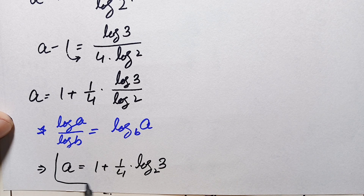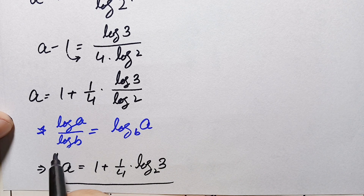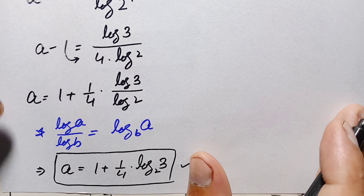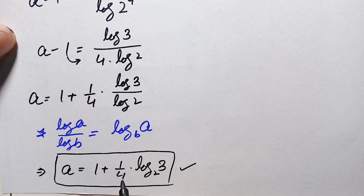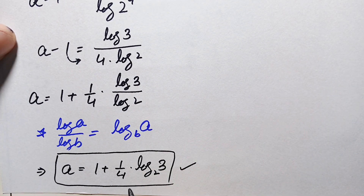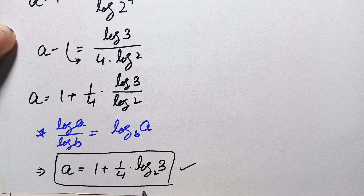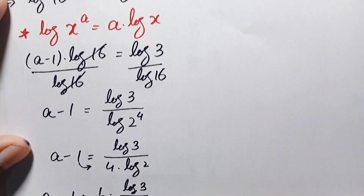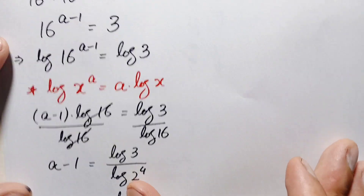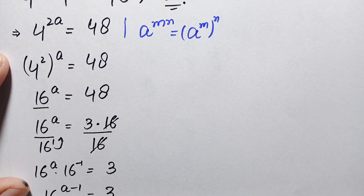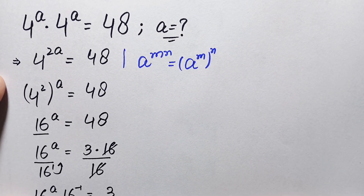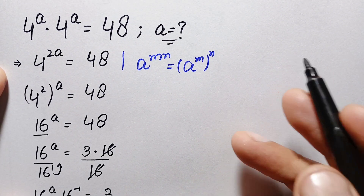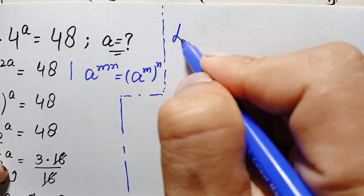So finally, the value of a in terms of log is: a equals 1 plus one-fourth times log base 2 of 3. Now we will try to verify that this is the exact and correct value of a in this interesting exponential math problem.